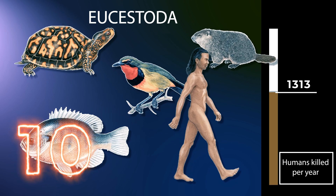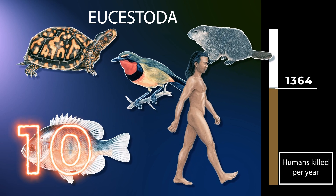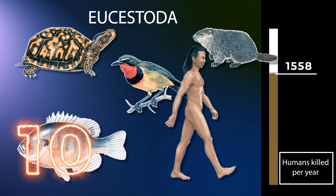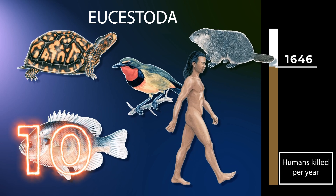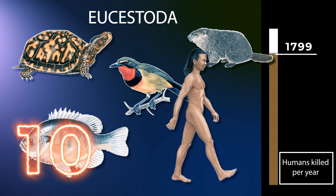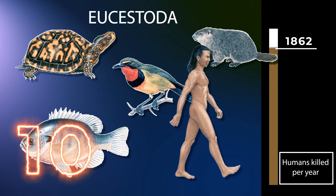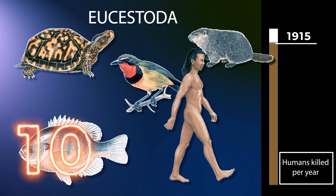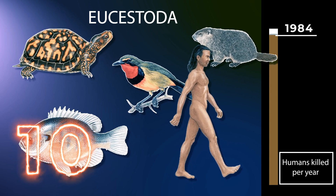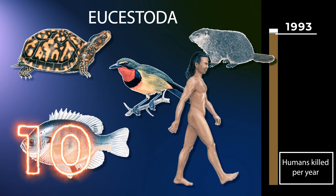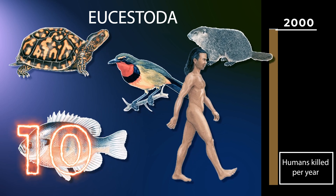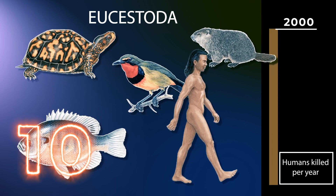A tapeworm can live from a few days to over 20 years. Eucestoda ontogenesis continues through metamorphosing in different larval stages inside different hosts. The embryo continues to develop in other host species, with two intermediate hosts generally needed. It gains entry to its first intermediate host by being eaten. Except for members of the order Taenia, the first intermediate host is an arthropod. The second host is usually a fish, but can be another invertebrate or vertebrate.